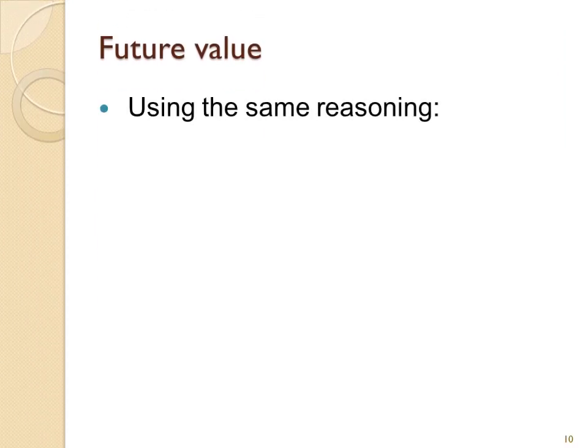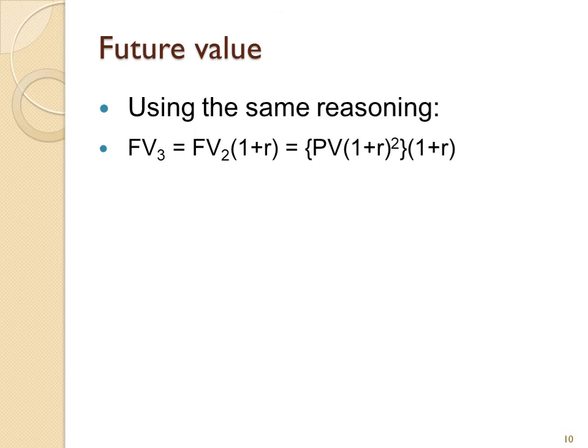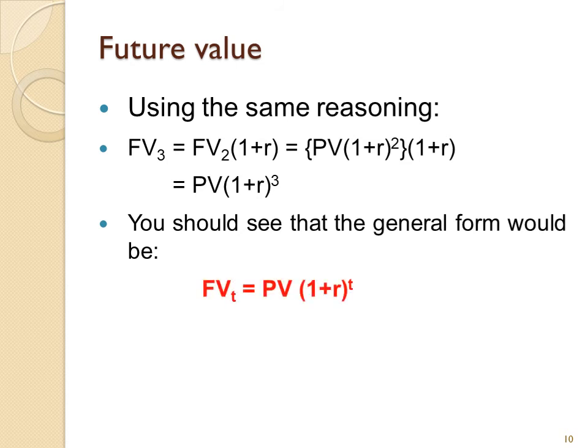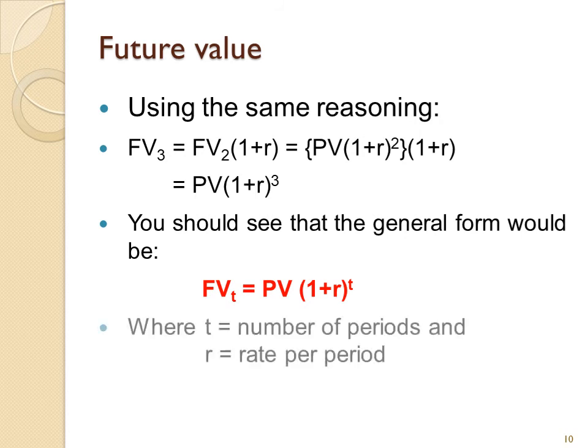Now, using the same reasoning, FV3 would be FV2 times 1 plus r, which is of course PV times (1 plus r) squared, and that all times 1 plus r. Again, gathering terms, PV times (1 plus r) to the power of three. I think you'll notice a certain pattern here. And so the general form would be future value at any given time is present value times (1 plus the rate per unit time) to the power of the number of periods. So t is the number of periods and r is the rate per period.